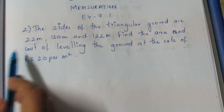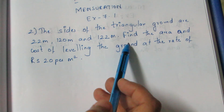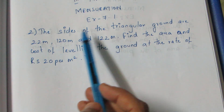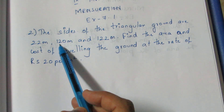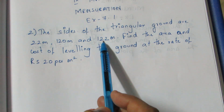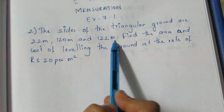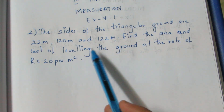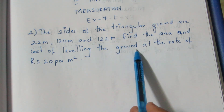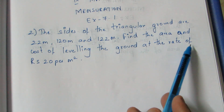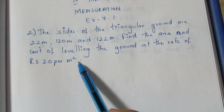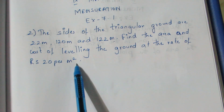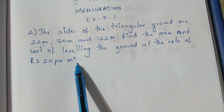Question: The sides of a triangle ground are 22 meter, 120 meter, and 122 meter. Find the area and cost of leveling the ground at the rate of 20 per meter square.